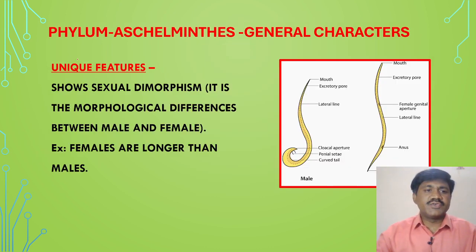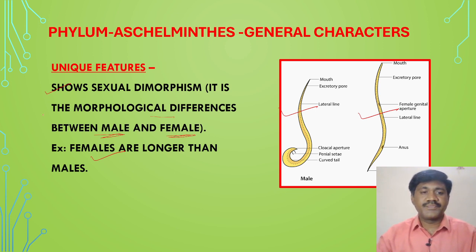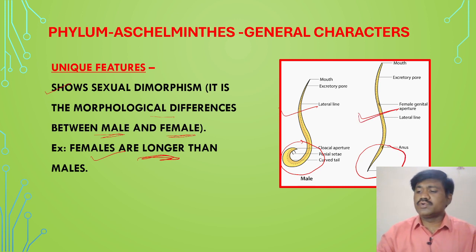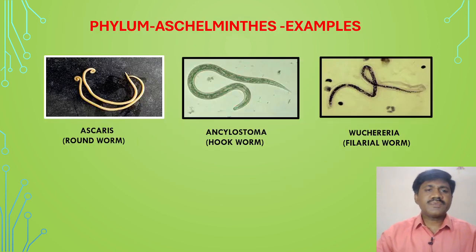Aschelminthes show sexual dimorphism — a morphological difference between males and females. Male and female are separate; they are dioecious, not monoecious. Importantly, females are longer than the males — this is a very important point to remember. Males generally have a curved caudal end, while females have a straight end and are longer than males. Remember these points for your examination.